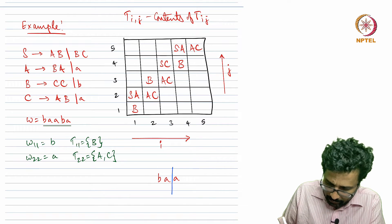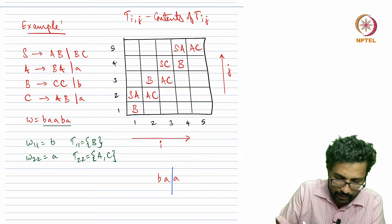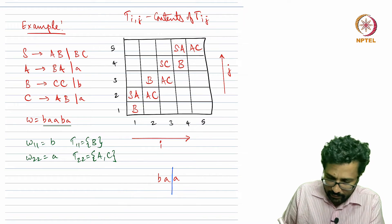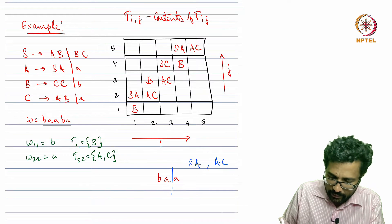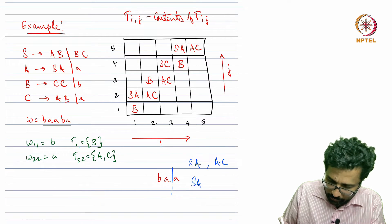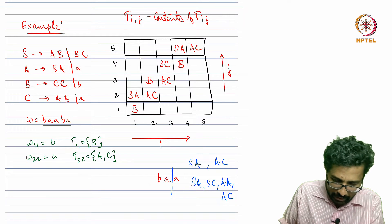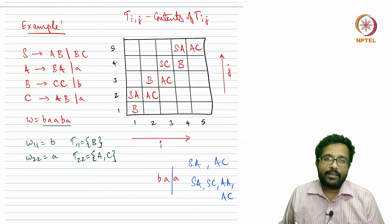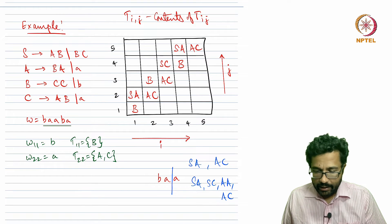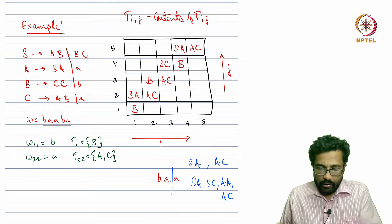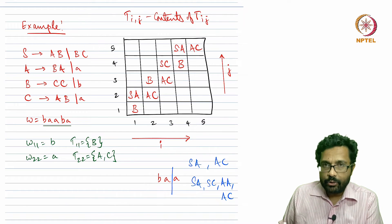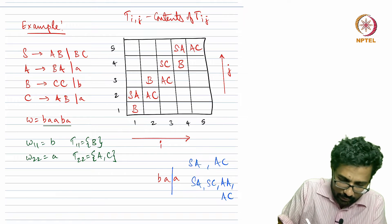The other possible split for T[1,3] is T[1,2] and T[3,3]. T[1,2] contains S and A; T[3,3] contains A and C. The four combinations are S,A — not there; S,C — not there (S is a start variable, Chomsky Normal Form does not allow it on the right-hand side); A,A — not there; A,C — not there. So T[1,3] remains empty: no variable generates the string b,a,a.